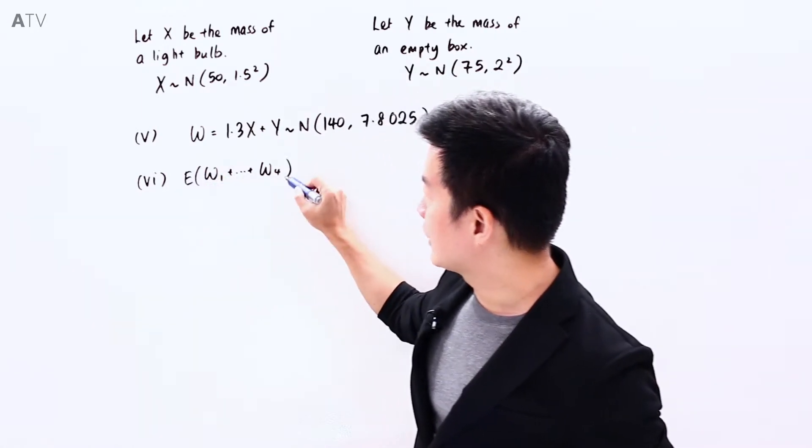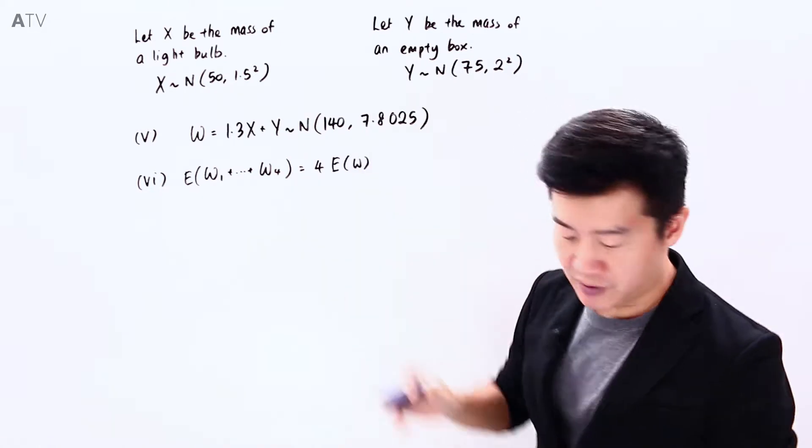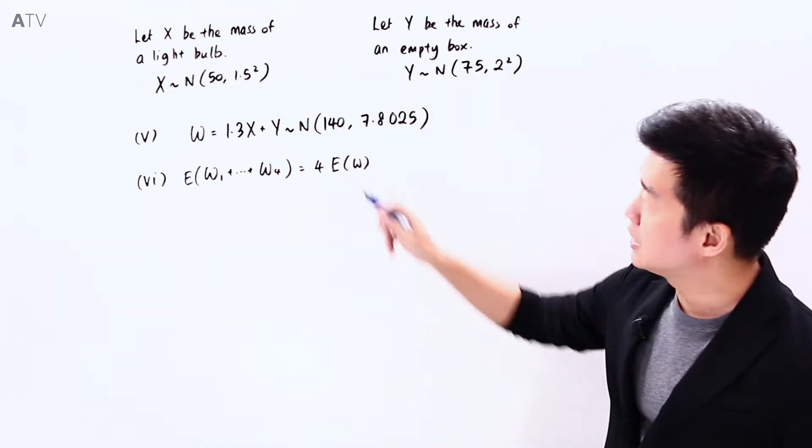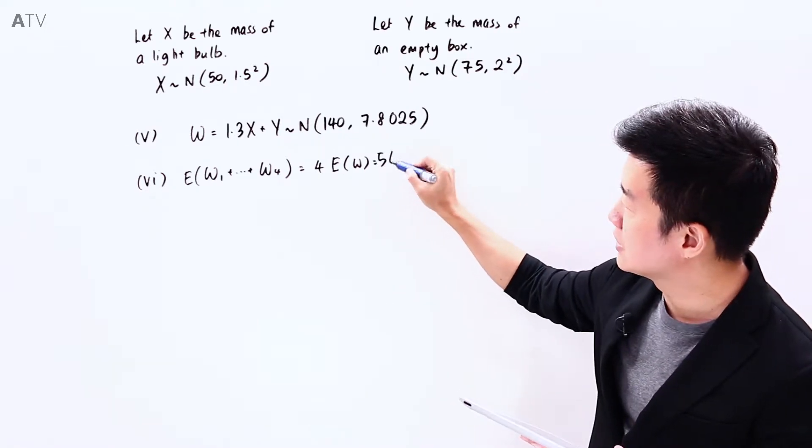We will find the expectation of this, which is going to be 4 times the expectation of W, which is going to be 4 times 140, that will be 560.